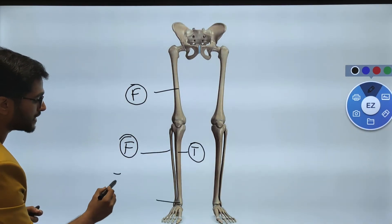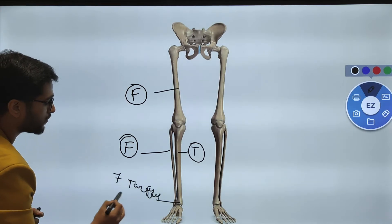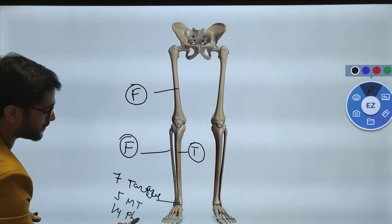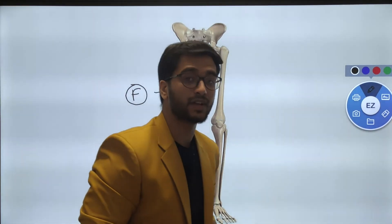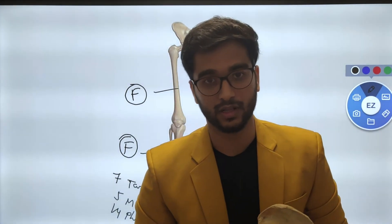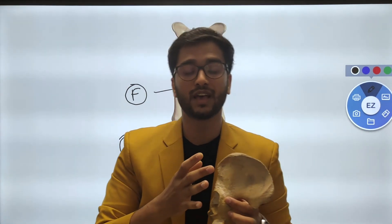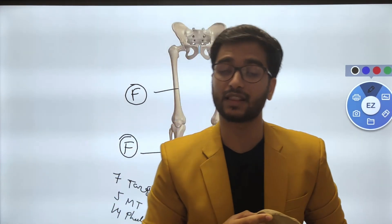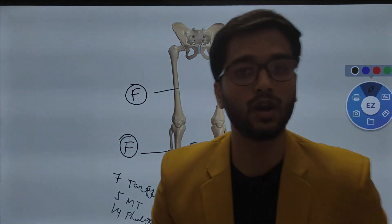There are 7 tarsals, 5 metatarsals, and 14 phalanges in the lower limb. The phalanges are divided into distal, proximal, and intermediate. The hip bone is the bone of the pelvic girdle, independently formed by the fusion of three bones: the ilium superiorly, the pubis anteriorly, and the ischium posteriorly.